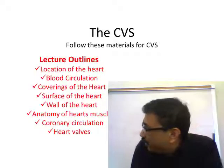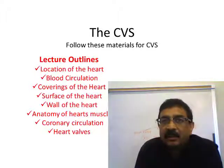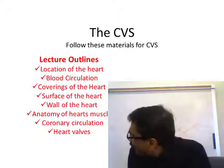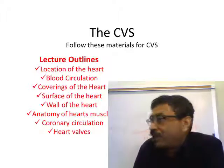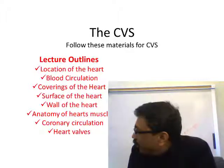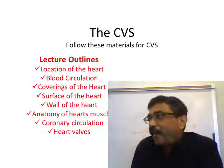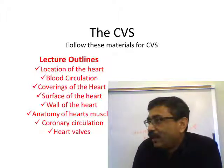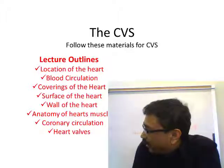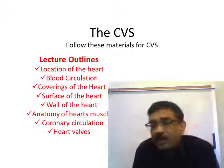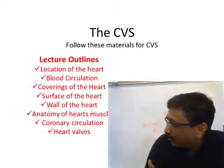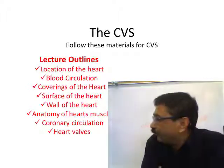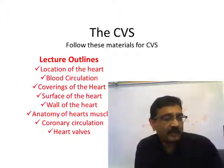The heart is the most important organ. We will see the anatomy of the heart — its location in the body, its shape and size, and how it looks from outside. Then we will talk about the circulation of blood, different types of blood circulation, the coverings of the heart, the surface and wall of the heart, heart muscle under the microscope, coronary circulation, and the valves inside the heart.